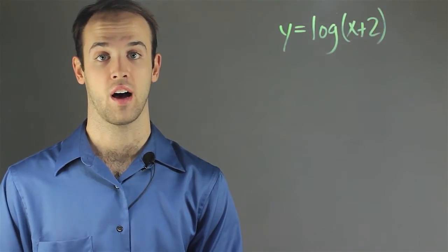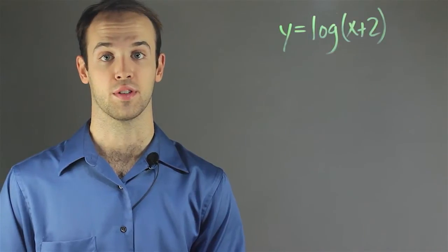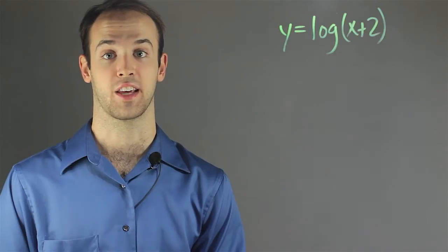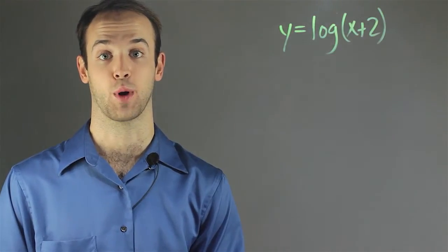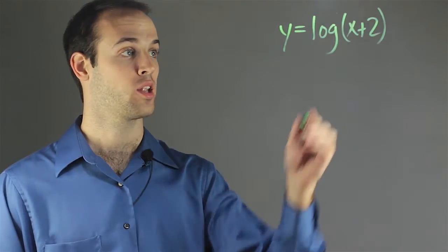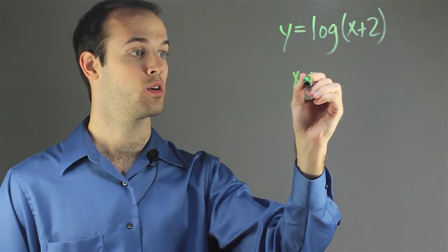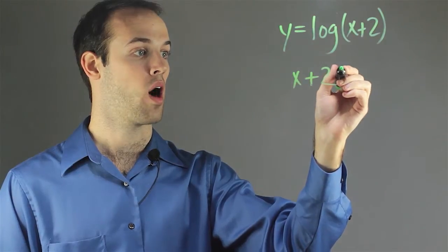Well, we know we can't take the log of 0 or negative numbers. So we know that there's going to be a vertical asymptote somewhere on this graph that is going to prohibit the x values from going past it. So I'm going to look at where my x values are going to be 0 or negative by setting up this inequality.